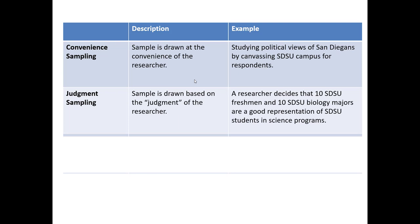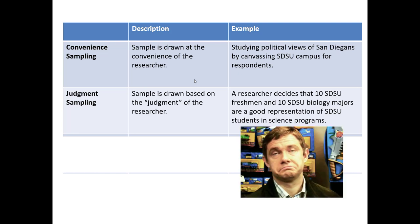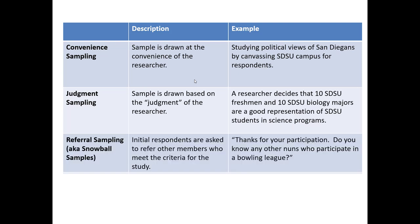Judgment sampling is when the sample is drawn in a way that's based solely on the judgment or best guess of the researcher. For example, a researcher decides that 10 SDSU freshmen and 10 SDSU biology majors are a good representation of SDSU students in all science programs.